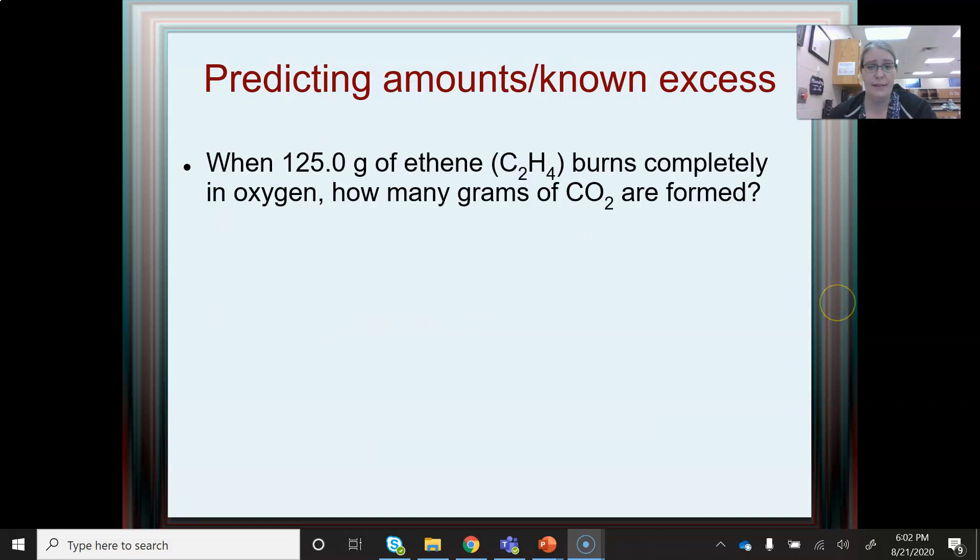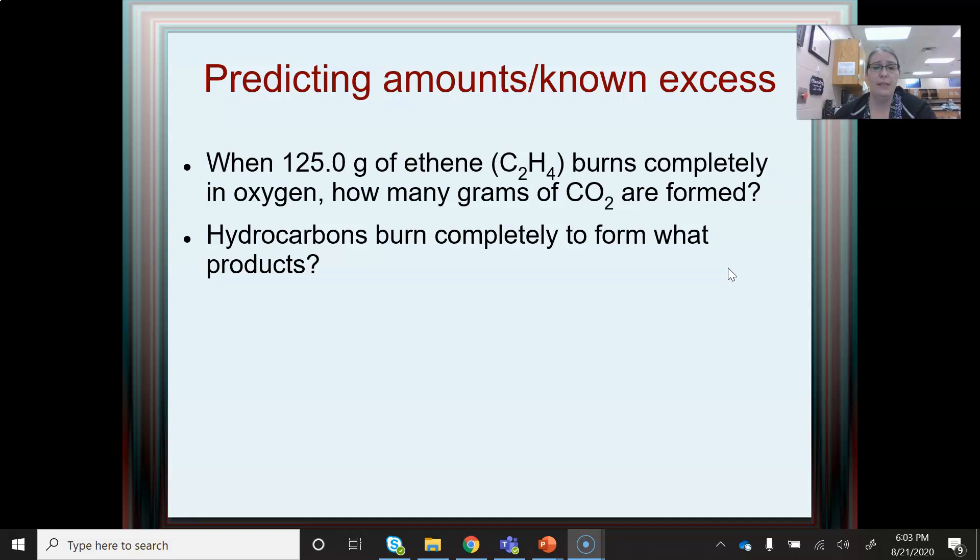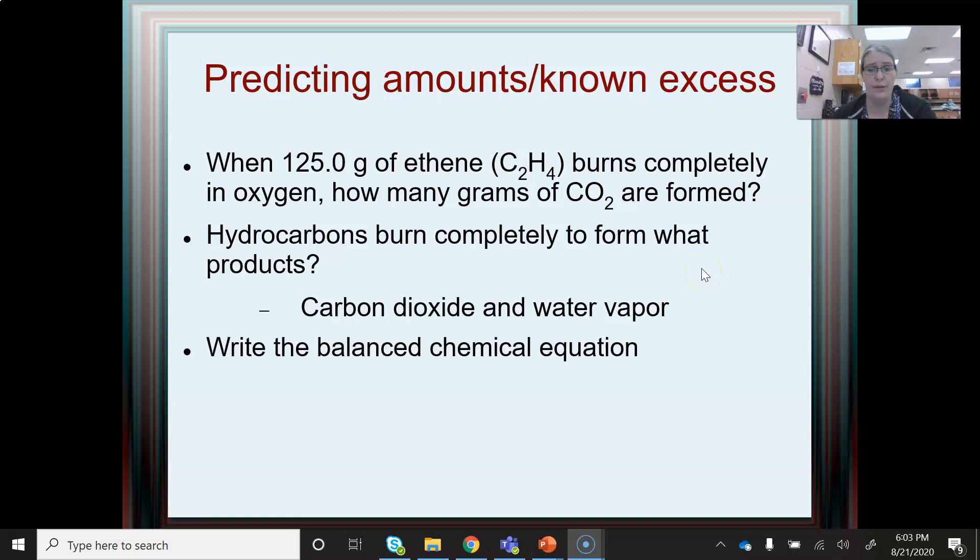So if I have a known excess, that's a problem where they give me something about one part of the reaction, one reactant, and they don't tell me about the other. First, we talked about last week hydrocarbons burning completely to form what kind of products? They form carbon dioxide and water vapor. So I can write the balanced chemical equation.